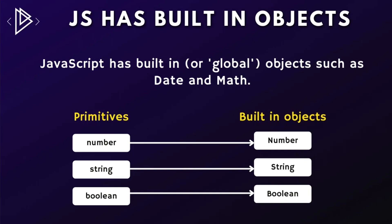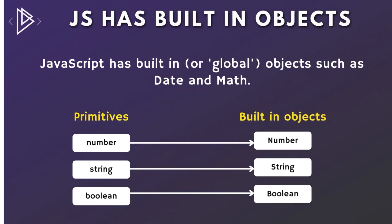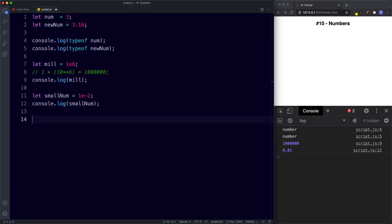These built-in corresponding objects have two main purposes: number one, to store special properties; and number two, to provide functionality in the form of methods. We'll take a look at the properties and methods on the Number object in the next lesson. To be clear, numbers can't access the String object and strings can't access the Number object — attempting to do so will cause an error.